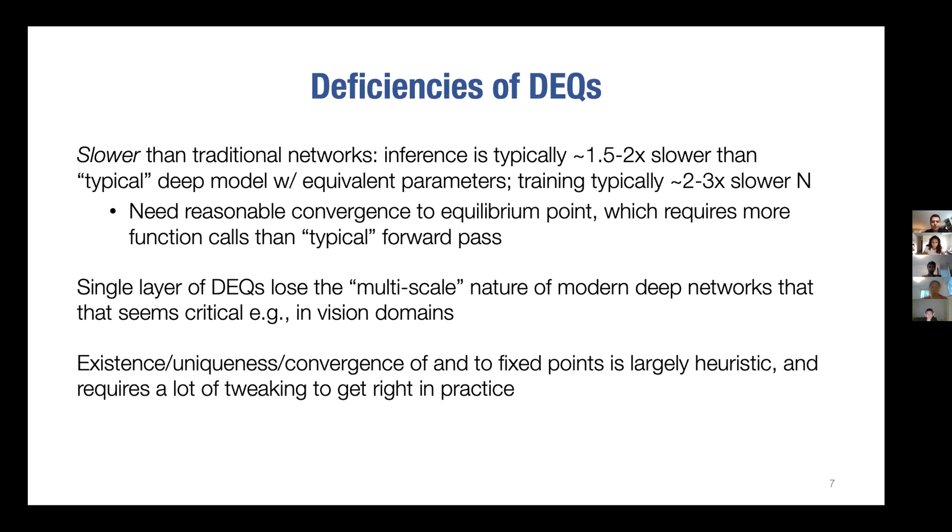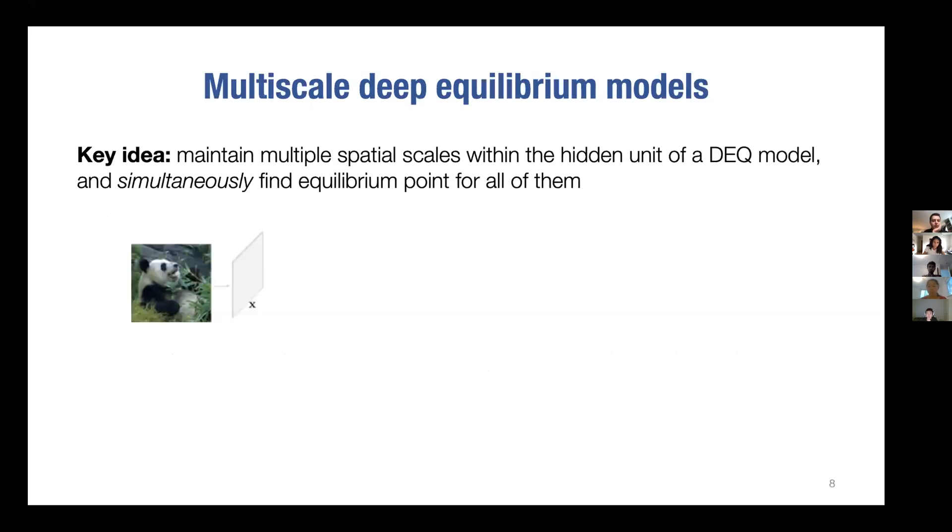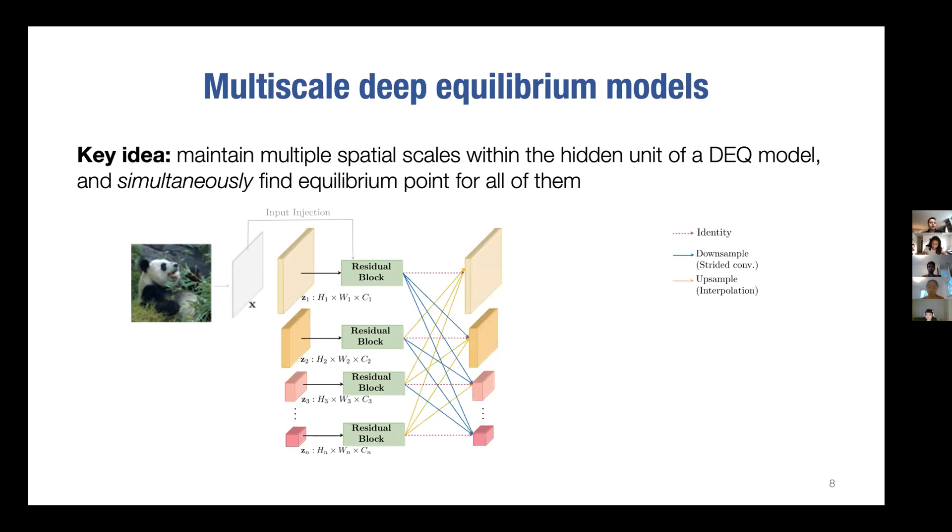I want to highlight some ongoing work that tries to address these two problems. This is very new - it's on arXiv but not published elsewhere yet. The first are multi-scale deep equilibrium models. This extends these DEQ models to the case of multi-scale vision domains where, rather than finding a single equilibrium point, what we actually do is maintain multiple different scales or resolutions of features in tandem. We apply kind of a residual block to each of these, but then importantly mix them all together. We upsample or downsample the different size images to mix all the resolutions together at each step. We can think of this whole thing together jointly as the function that we're trying to find an equilibrium for. We're trying to find a joint equilibrium point at all scales of our features simultaneously.